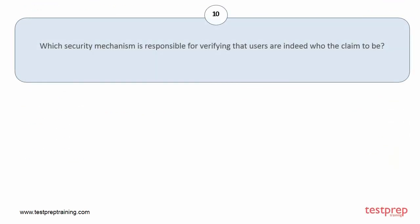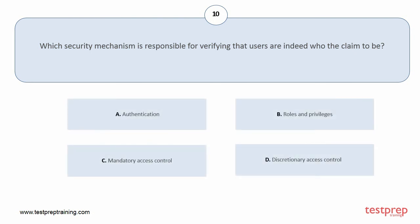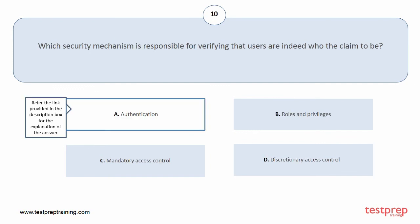Question number 10. Which security mechanism is responsible for verifying that users are indeed who they claim to be? Your options are: A. Authentication. B. Roles and privileges. C. Mandatory access control. D. Discretionary access control. The correct answer is option A — Authentication.